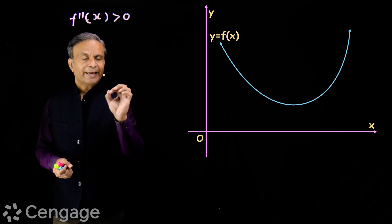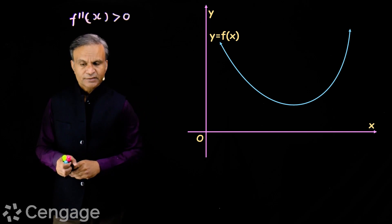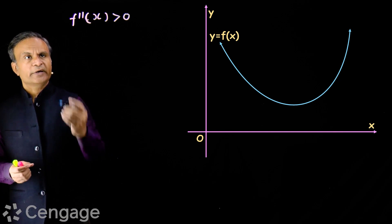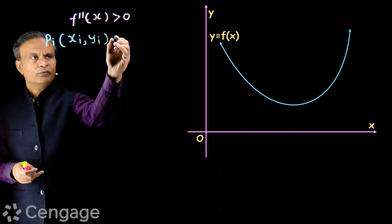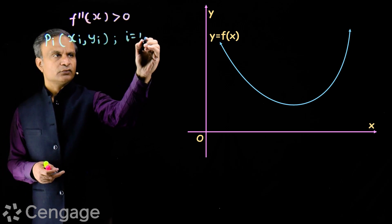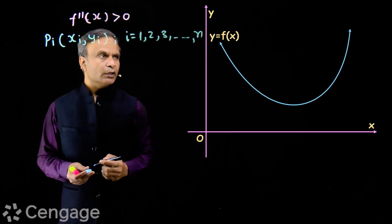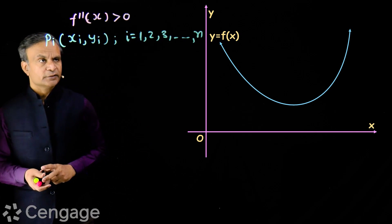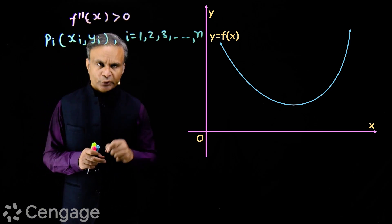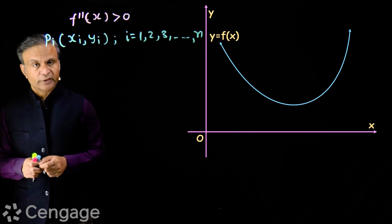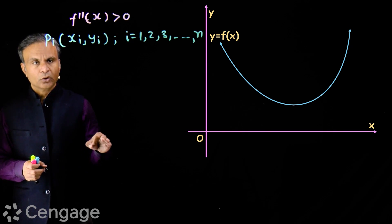Now what we do — we consider n points on the curve. On this curve we consider n number of points. These points are Pi having coordinates (xi, yi) where i is equal to 1, 2, 3 up to n. Point P1 has coordinates (x1, y1), point P2 has coordinates (x2, y2), and so on up to point Pn having coordinates (xn, yn).